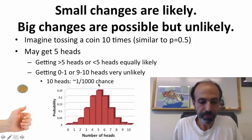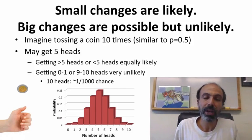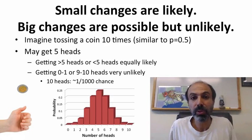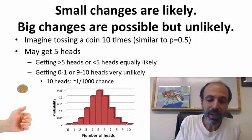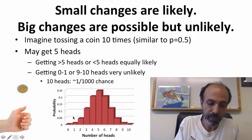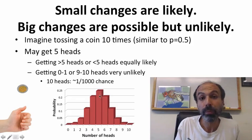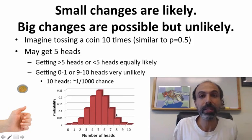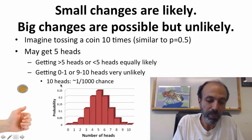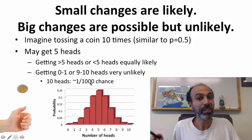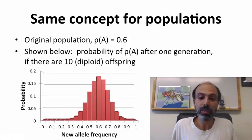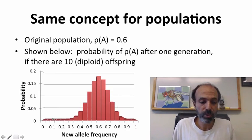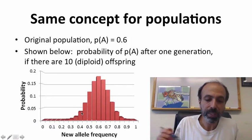Imagine tossing a coin 10 times. This is similar to having p equals 0.5. You may get five heads — exactly what's expected on average since you're equally likely to get heads or tails. Getting more than five heads or fewer than five heads is equally likely. The probability of getting exactly five heads is actually less than a quarter. The probability of having 10 heads or zero heads is extremely low — in fact about one in a thousand. The same concept applies to populations. If your original population has an allele frequency of big A of 0.6, the probability of it being greater than 0.6 versus less than 0.6 after one generation of genetic drift is about the same, assuming 10 diploid offspring.